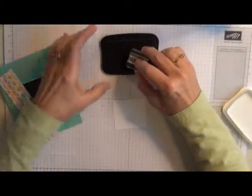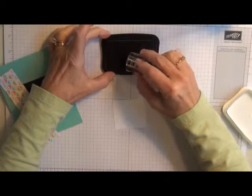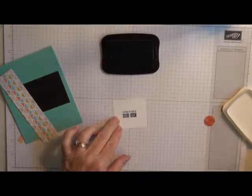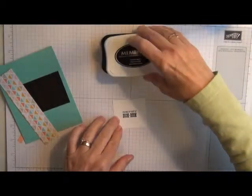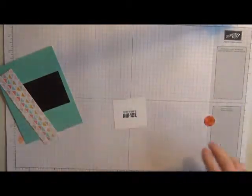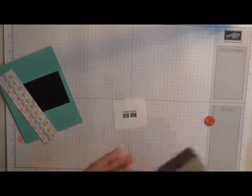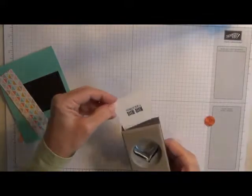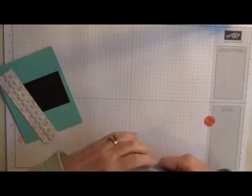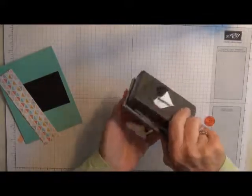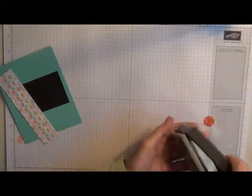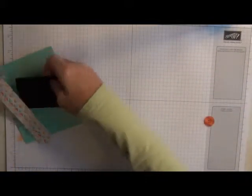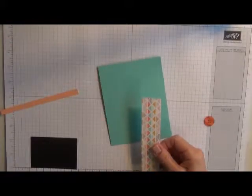So I'm just going to ink this up with my ink pad and I'm going to stamp it right in the middle of this piece of whisper white paper and I'm going to use the heart punch to punch it out. I'm going to set that aside for the moment and then I'm going to just get the rest of my card prepared.